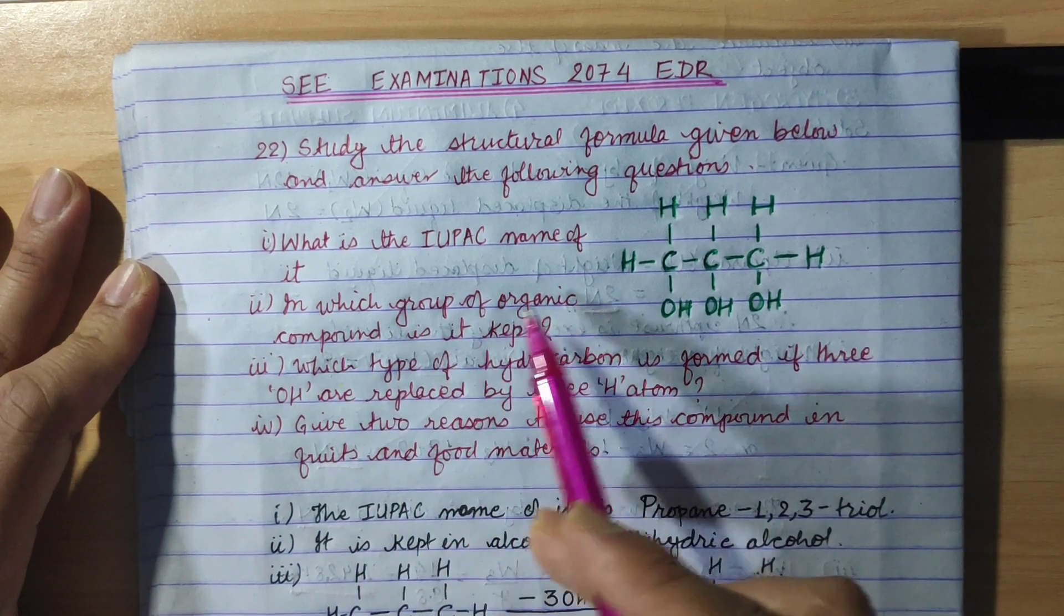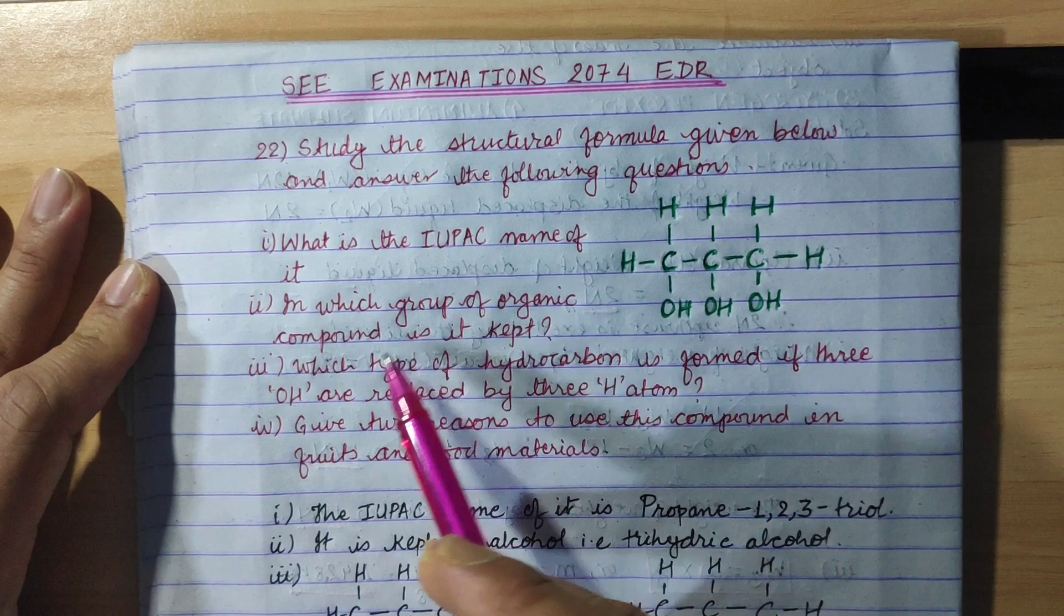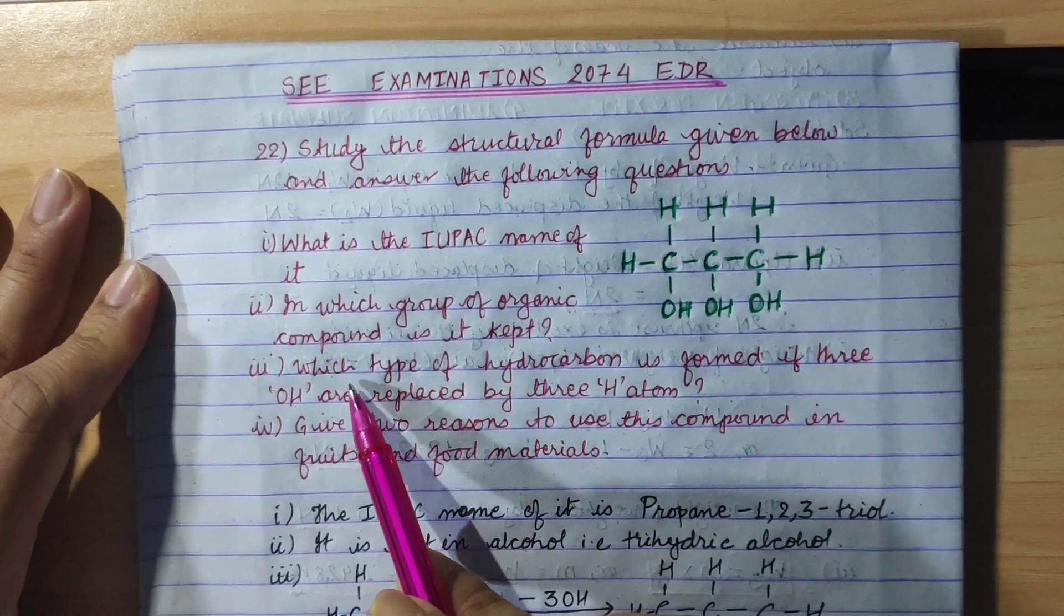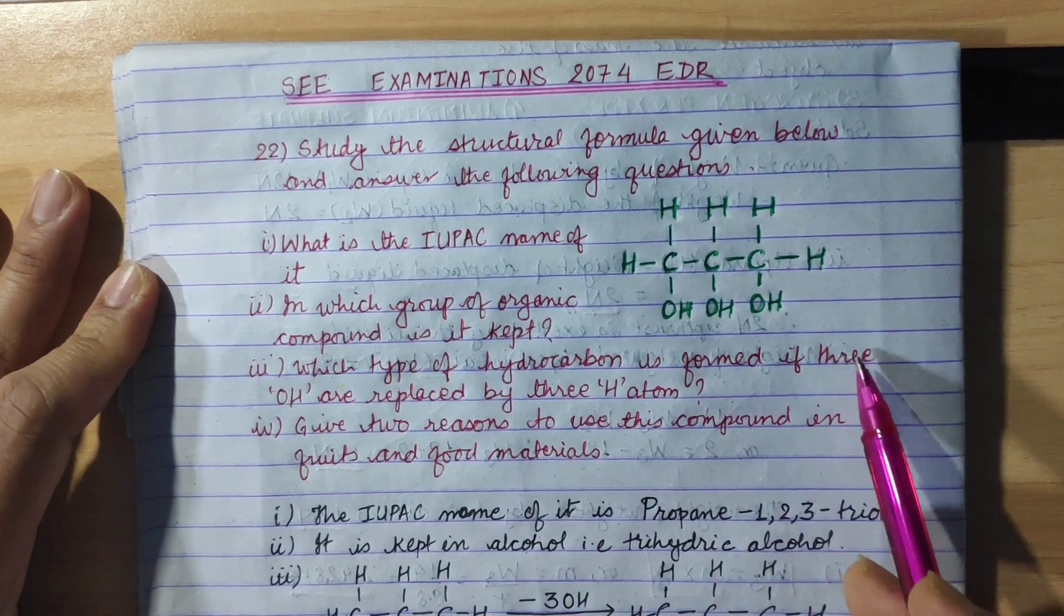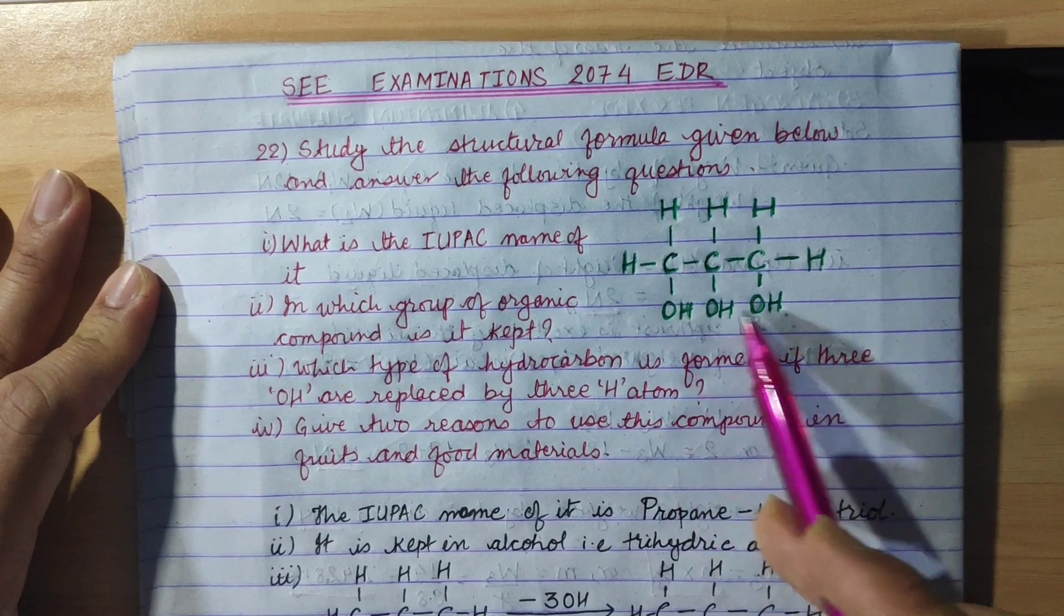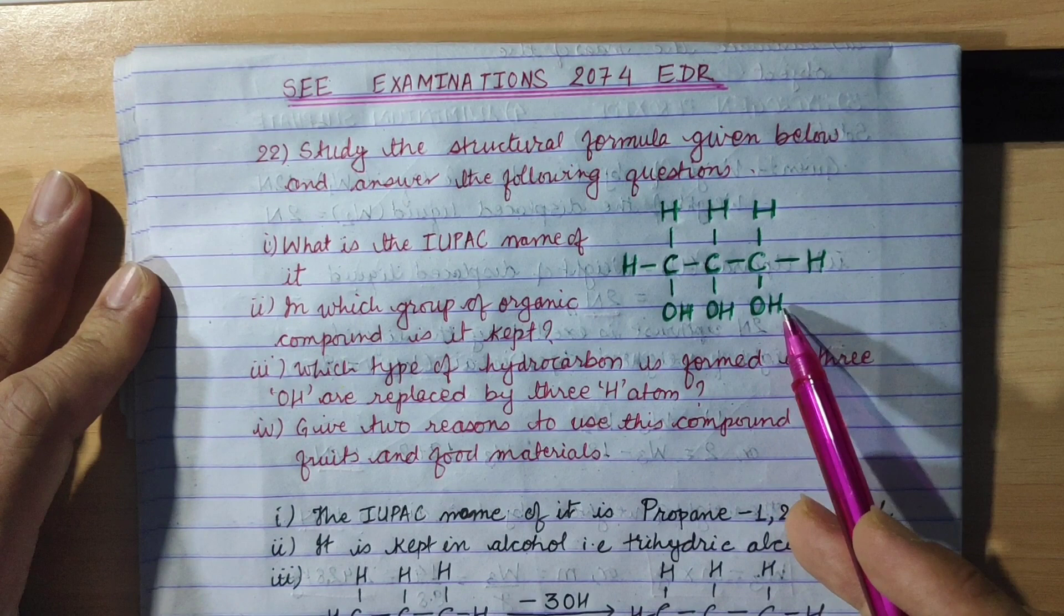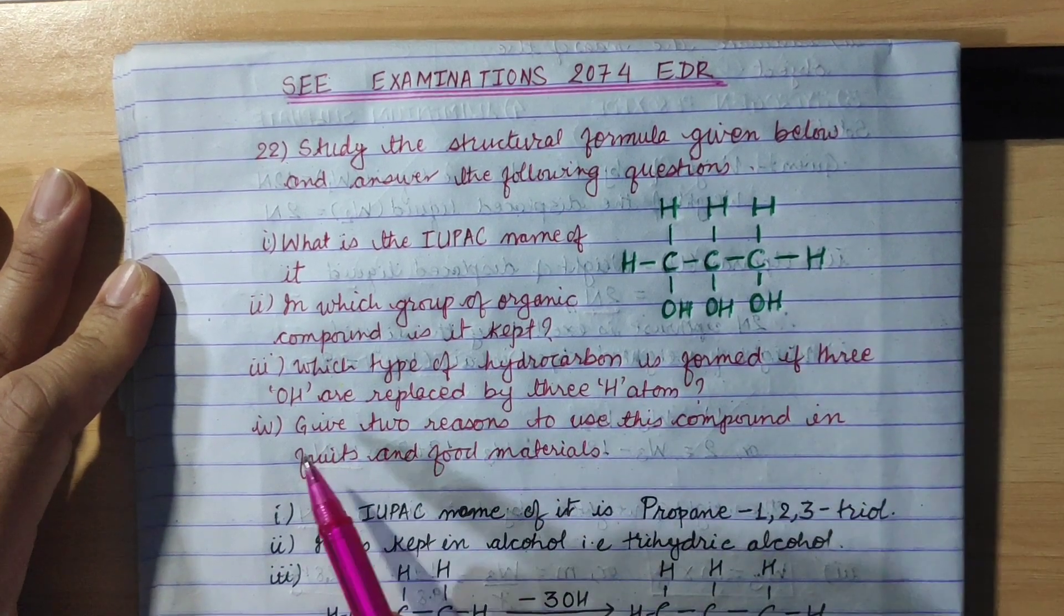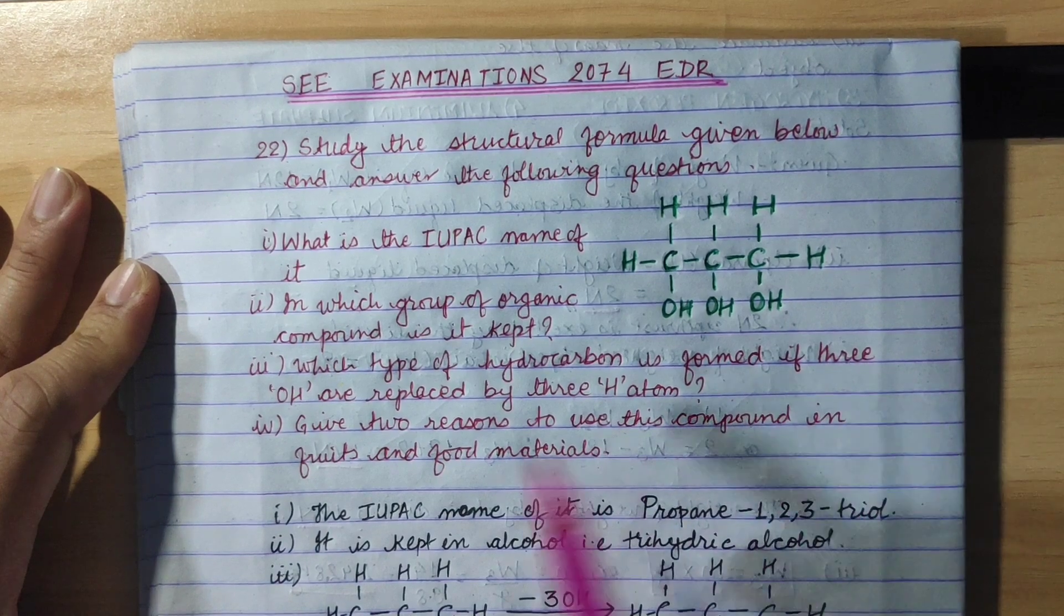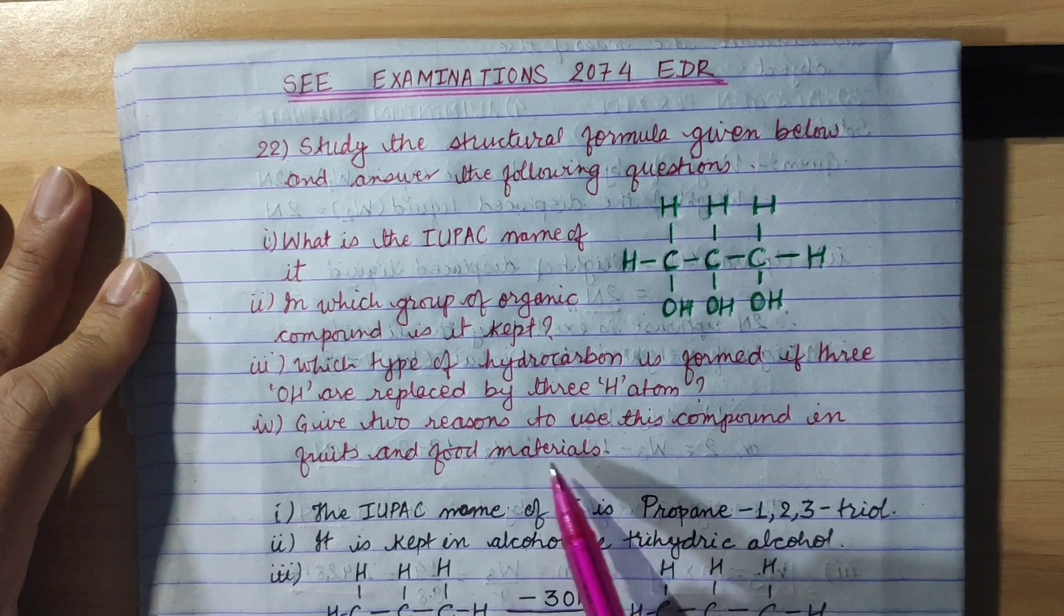In which group of organic compound is it kept? Third, which type of hydrocarbon is formed if three OH are replaced by three hydrogen atoms? Fourth, give two reasons to use this compound in fruits and food materials.